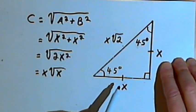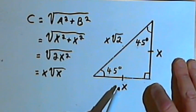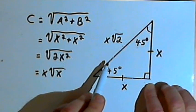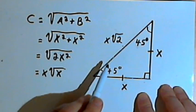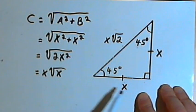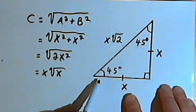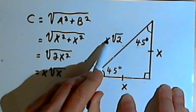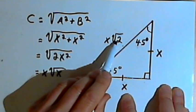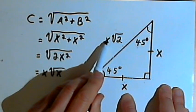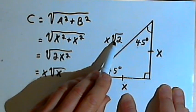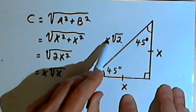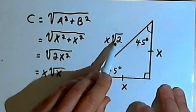We can use this relationship between the leg and hypotenuse to solve specific problems. For instance, if you're told the leg is 15 meters, then you know the hypotenuse — instead of x times the square root of 2 — would be 15 times the square root of 2 meters. Whatever the leg length is, the hypotenuse is that same length times the square root of 2.